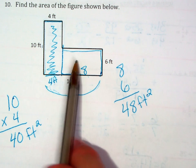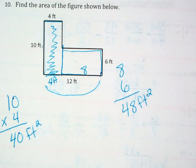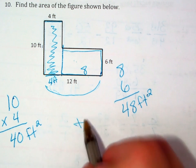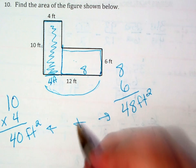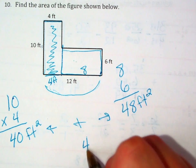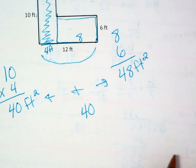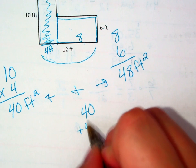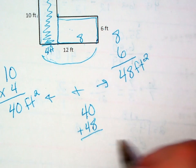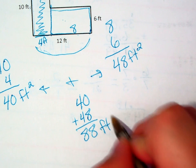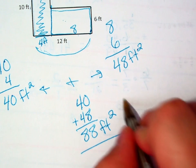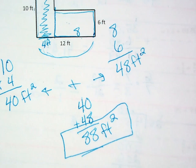Now that I know the area of both of my individual rectangles, I can take the two and add them together. So 40 plus 48 will give me 88 feet squared as a solution.